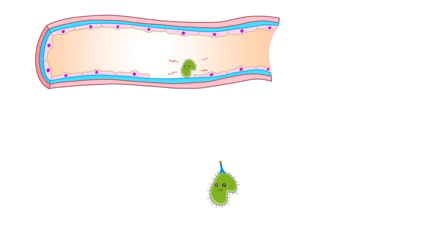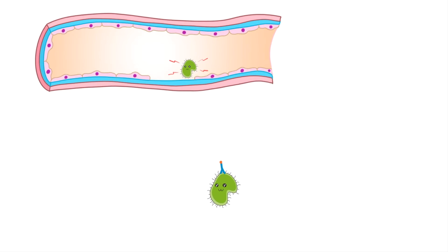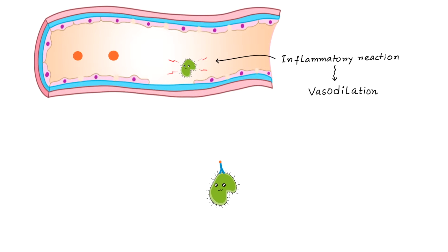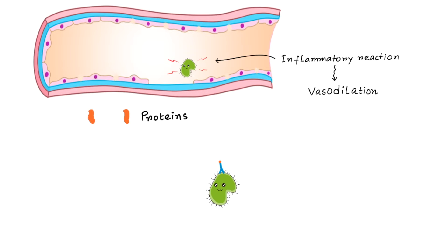As the bacteria are damaging this area, there is naturally an inflammatory reaction, which causes vasodilation as well as increased permeability of the microcirculation. So proteins are leaking out from the vascular area into the interstitial area. Here is the complement protein — imagine it as a sleeping baby. It finally has a chance to come out, but it is not yet active.